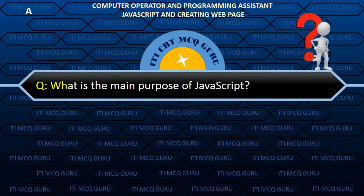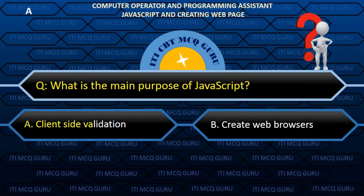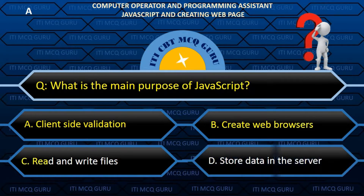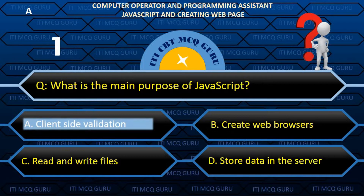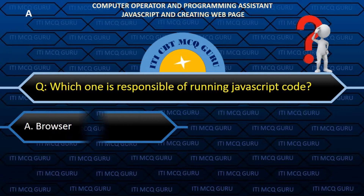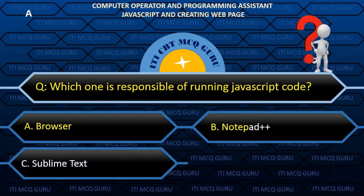What is the main purpose of JavaScript? A. Client-side validation. Which one is responsible for running JavaScript code? A. Browser.